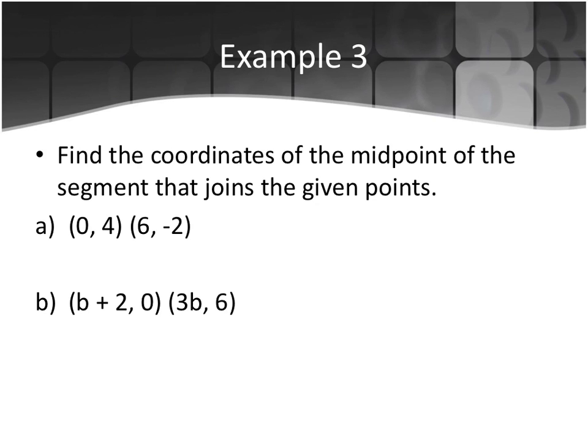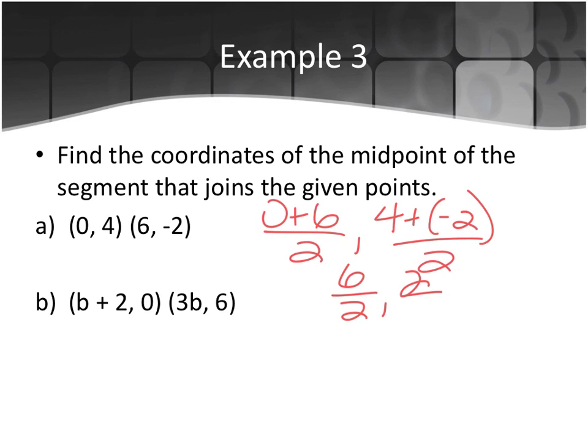All right, so example 3 says, find the coordinates of the midpoint of the segment that joins the given point. So these are your endpoints, and you want to find the middle of them. So the first one should be pretty easy, right? We're just adding the two X's, so I would get 0 plus 6, divide it by 2, and then I'd get 4 plus a negative 2, and divide it by 2. So I'd get 6 over 2, 2 over 2, which becomes 3, 1. Everybody good so far? Yeah?